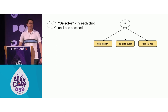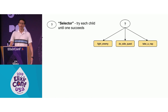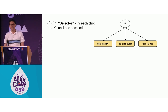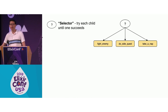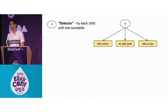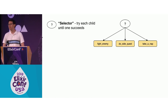This is one common type of control node called a selector. The way a selector works is it runs its first child, and if that child fails, then it will try the next one. It just keeps going until it reaches a child that succeeds, and then the whole selector will succeed. If it runs through all of its children and none of them succeed, then the selector node fails.